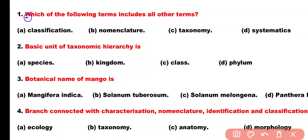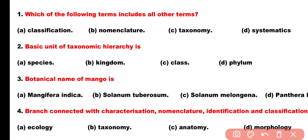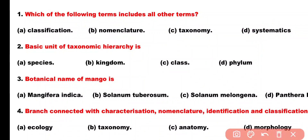Question number 1. Which of the following terms includes all other terms? Option A: Classification, Option B: Nomenclature, Option C: Taxonomy, Option D: Systematics. Correct answer is Option D. Systematics includes classification, nomenclature as well as taxonomy.